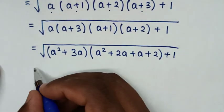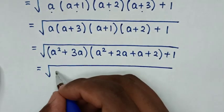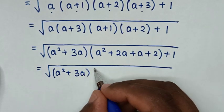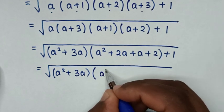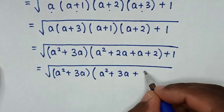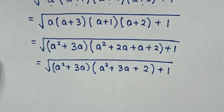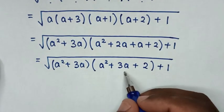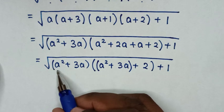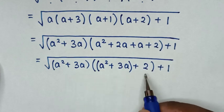In the next step, it will be equal to square root of (a squared plus 3a) times (a squared plus 3a plus 2) plus 1. Notice that a squared plus 3a appears in both factors, so we place a bracket inside the bracket and let that expression be grouped.